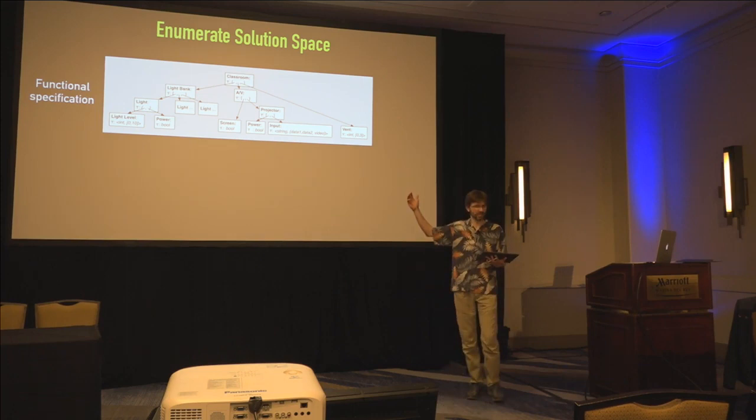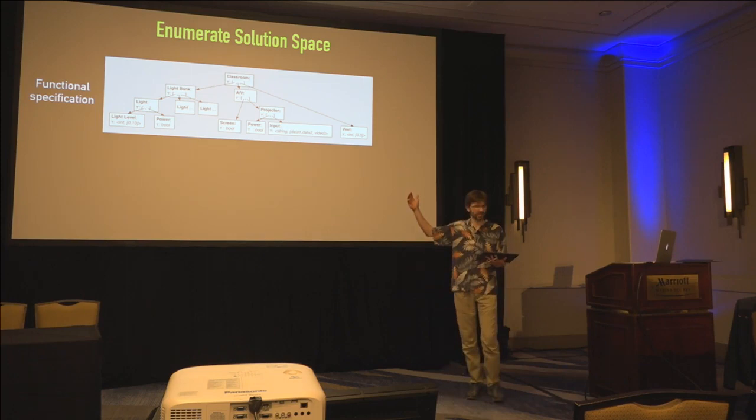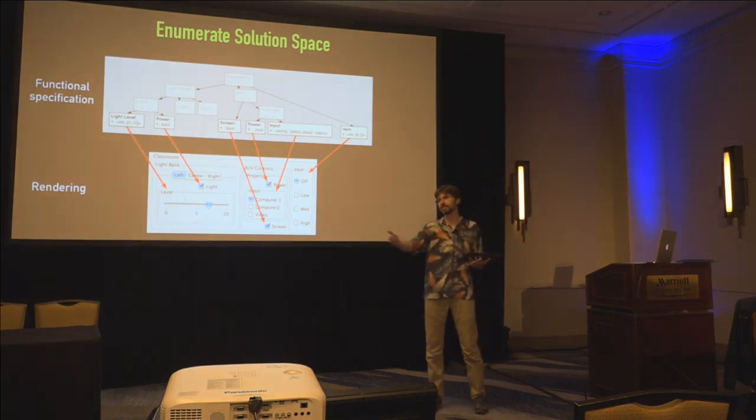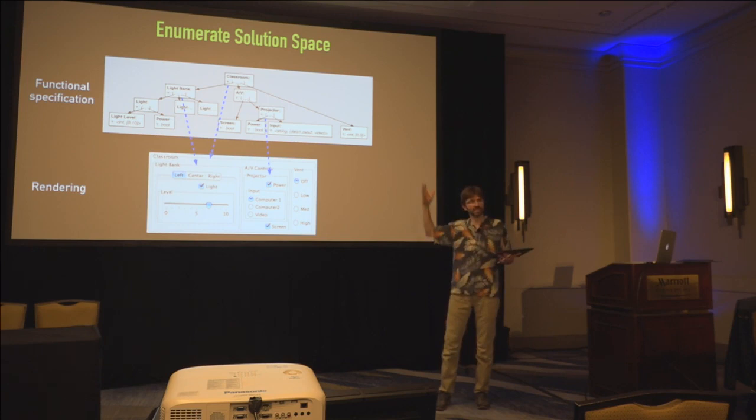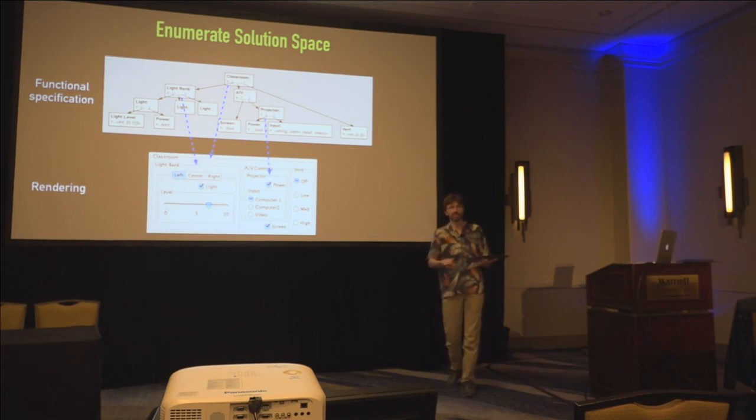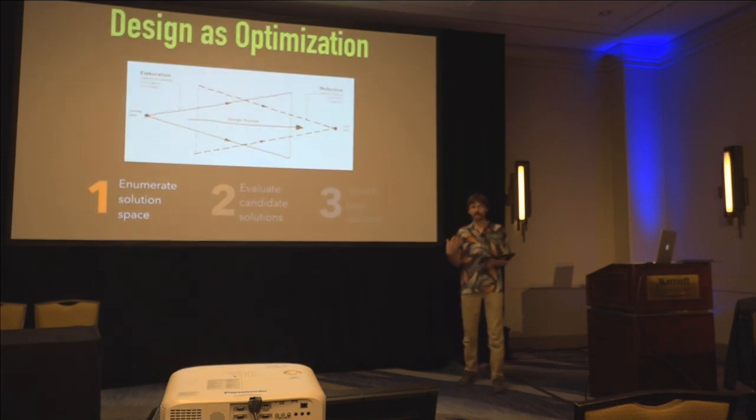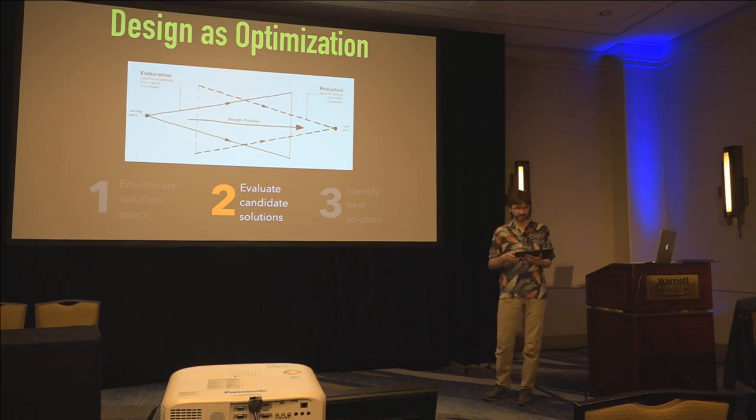To enumerate the design space, we represented user interfaces as trees where leaf nodes corresponded to different types of information to be exchanged between the application and the user, and interior nodes corresponded to semantic groupings of those elements. The system transforms this abstract representation into a concrete user interface, turning leaves into specific interactors and interior nodes into layout decisions. Evaluating candidate solutions then became the next challenge.